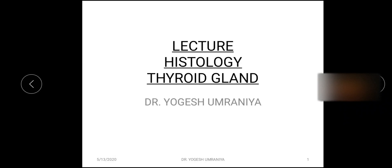Today we are going to start our practical on the endocrine system. In this first part, we will discuss the histology of the thyroid gland. The thyroid gland is basically situated in the neck region, having two lobes, and these two lobes are connected with each other by the isthmus.